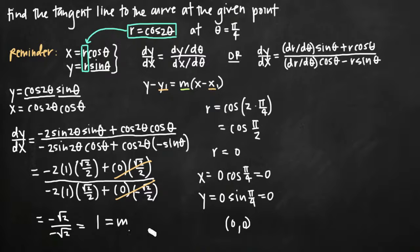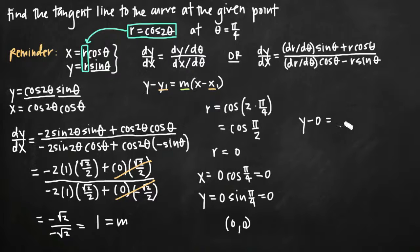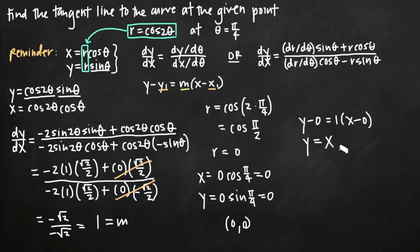Now we have m equals 1 and the point (0, 0), so we plug both into the point-slope form. We get y minus 0 equals 1 times (x minus 0), which simplifies to y equals x. This is the equation of the tangent line to the polar curve r equals cosine of 2 theta at the angle theta equals pi over 4.